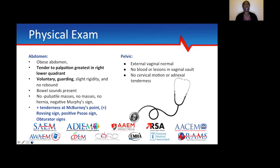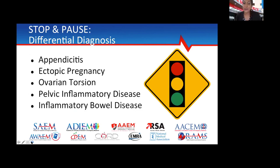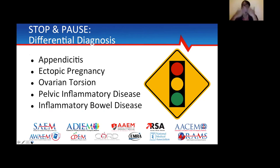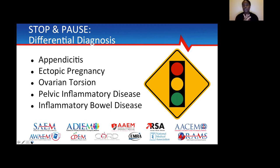It's time to pause and discuss the differential before jumping into workup. With all the positive findings, appendicitis is the primary differential. She's also a woman of childbearing age without a pregnancy test yet, so ectopic pregnancy with free fluid in the belly is a high concern. Ovarian torsion could also fit — the pain progressively got worse. Additionally: PID, nephrolithiasis, and inflammatory bowel disease are on the differential. But appendicitis is the primary, and ruling out ectopic pregnancy before a urine HCG is back is the most urgent concern.